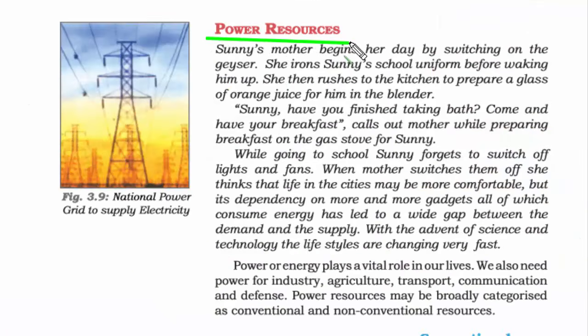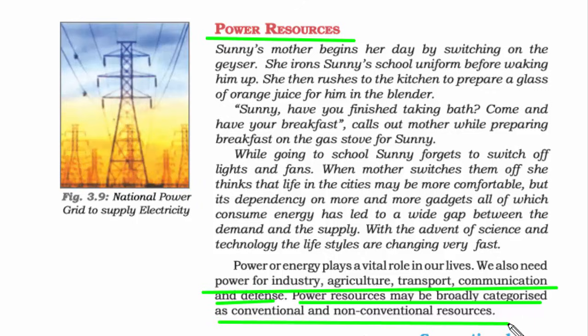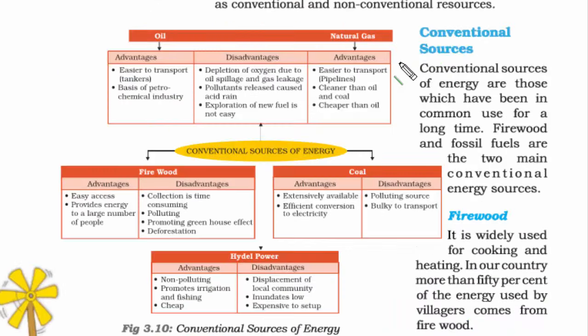The next topic is power resources. Power means energy and we need energy for industry, agriculture, transport, communication, and the defense sector. Power resources are broadly categorized into two categories: conventional and non-conventional resources. Conventional means traditional, old ways, while non-conventional means modern, new ways.